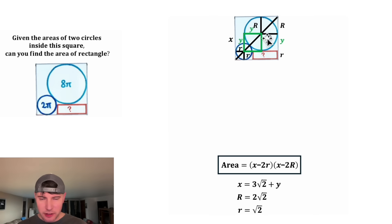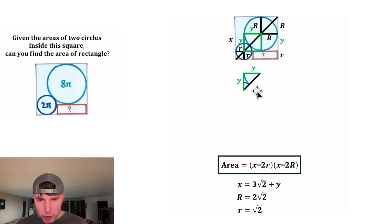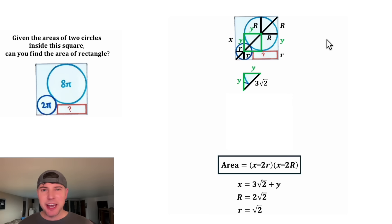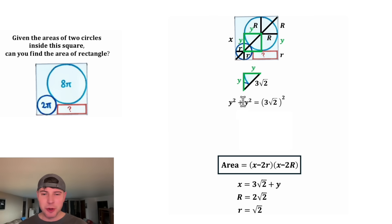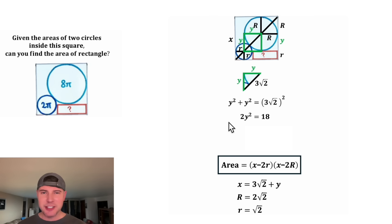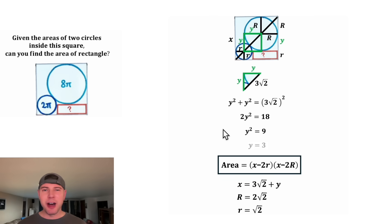Now all we've got to do is solve for Y. Let's focus on this half of the square, which makes a right triangle. The hypotenuse is big R plus little r, which equals 3√2. Now we can do the Pythagorean theorem: Y squared plus Y squared equals (3√2) squared. On the left-hand side, that's 2Y squared. On the right-hand side, 3 squared times (√2) squared is 9 times 2, which is 18. So 2Y squared equals 18. Dividing both sides by 2 gives Y squared equals 9, and square rooting both sides gives Y equals 3.